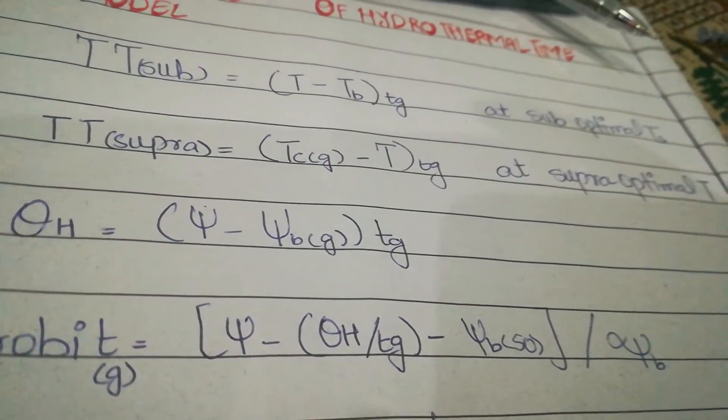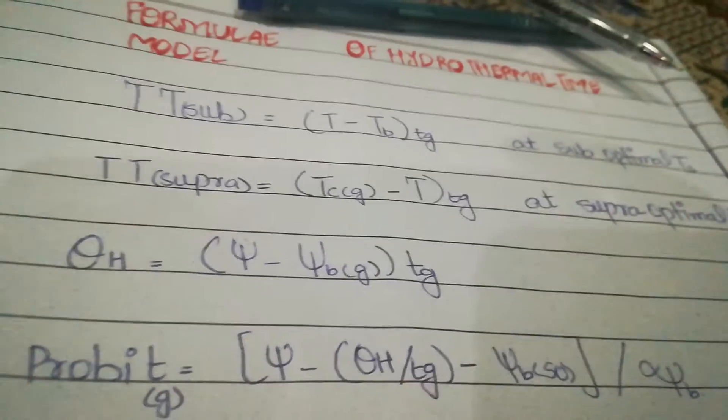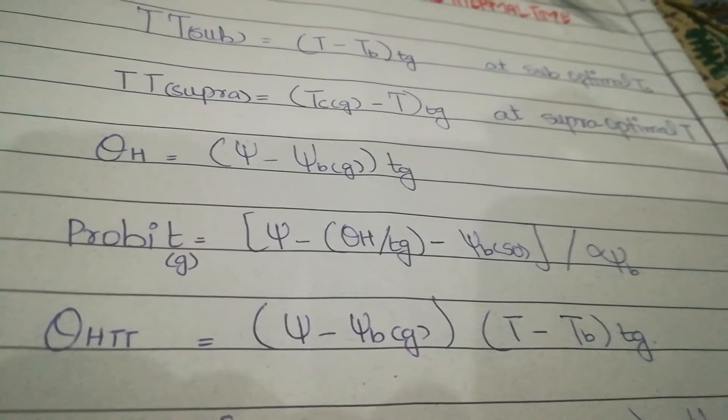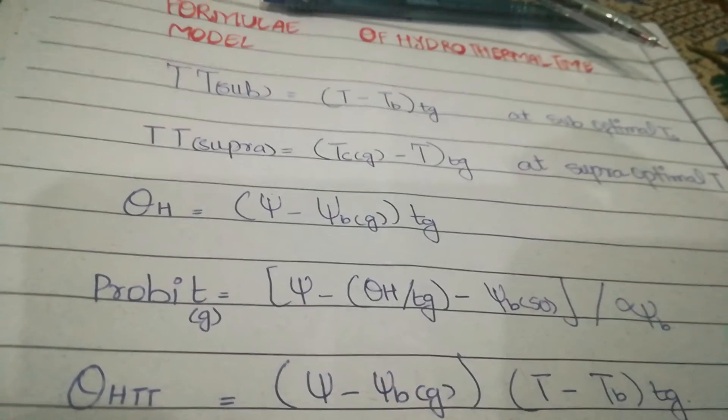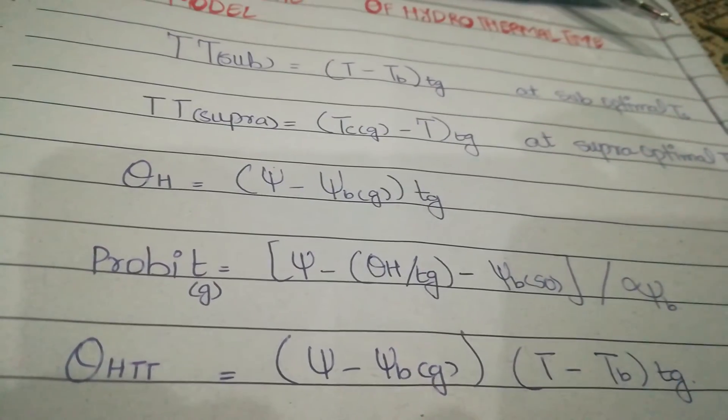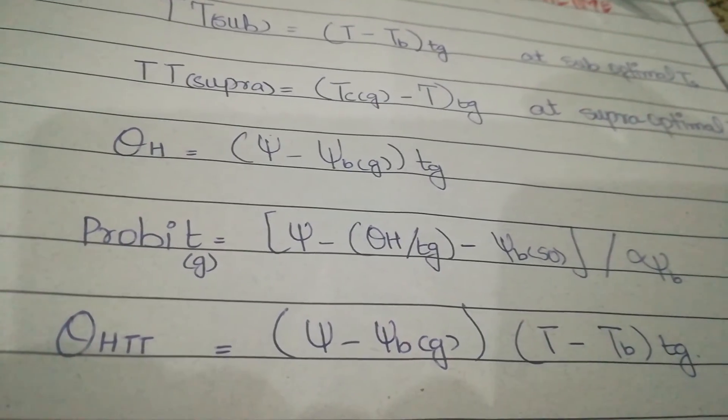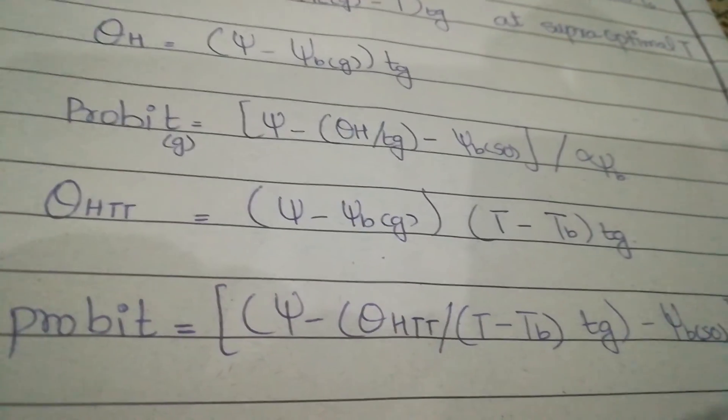divided by tg, a base water potential at 50% and standard. The fourth formula will be the hydro thermal time. The hydro thermal time is the combination of thermal time and hydro time. In this, the values of thermal time and hydro time will combine and we will find hydrothermal time model and then we